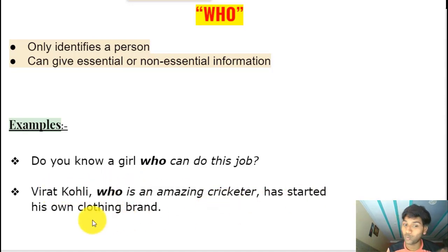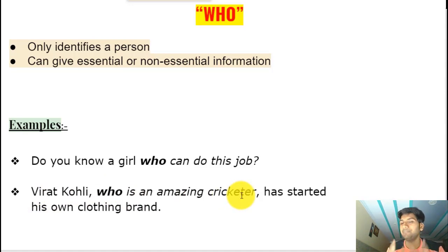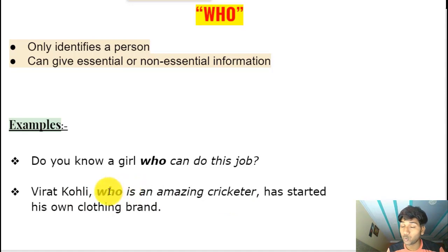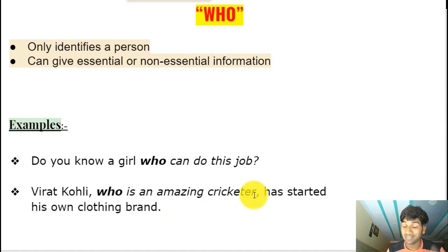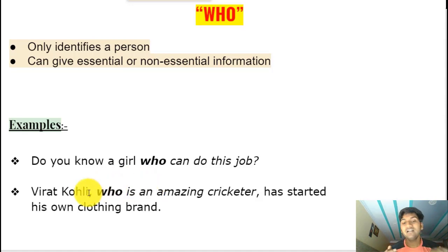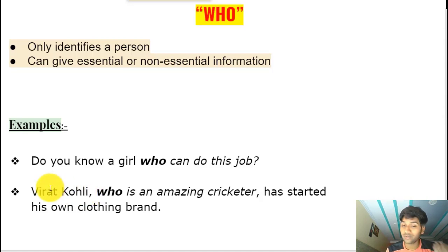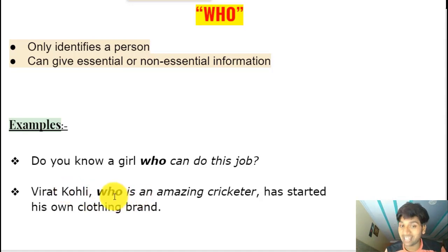'Virat Kohli, who is an amazing cricketer, has started his own clothing brand.' Virat Kohli is a proper noun — an already identified person. The clause 'who is an amazing cricketer' is offset using commas before and after it, meaning it's a non-essential adjective clause. This piece of information is not essential to identify Virat Kohli; it's giving extra information, which is why we use commas.